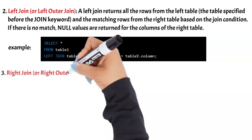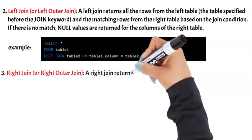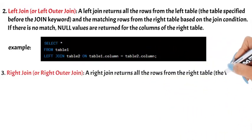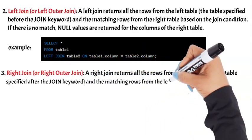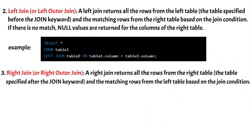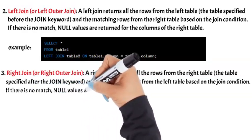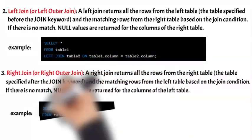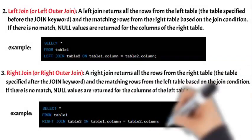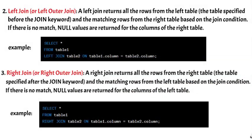3. RIGHT JOIN (or Right Outer Join): A right join returns all the rows from the right table (the table specified after the JOIN keyword) and the matching rows from the left table based on the join condition. If there is no match, null values are returned for the columns of the left table. In this example, the right join retrieves all rows from Table2 and the matching rows from Table1. If there are no matches, null values are returned for the columns of Table1.